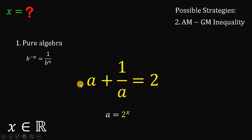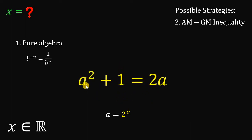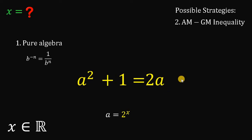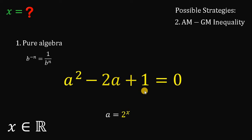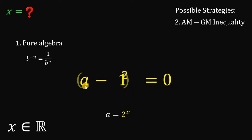Now let's multiply both sides by a to cancel out the denominator. If we do that, we get a squared plus 1 equals 2 times a. Now subtract 2a on both sides; this gives us a squared minus 2a plus 1 equals 0.